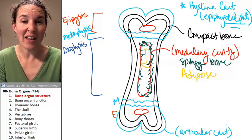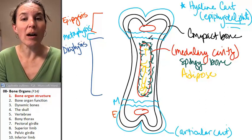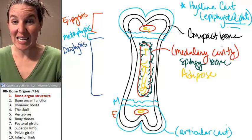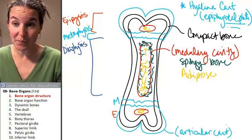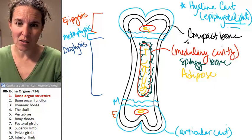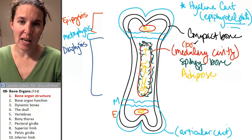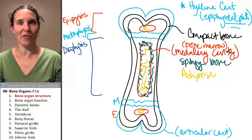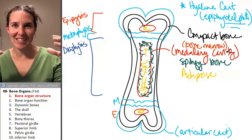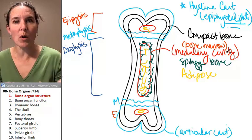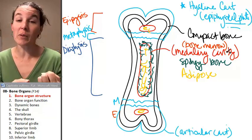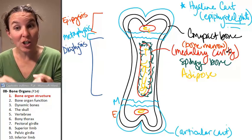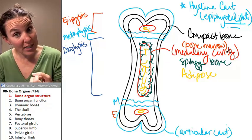Also in the medullary cavity, we're going to have adipose tissue. There's a lot of fat in there. Now the medullary cavity contains bone marrow. So the cavity is the space. It's filled with bone marrow. It's also filled with blood vessels, with nerves. It's also filled with adipose tissue and spongy bone tissue.